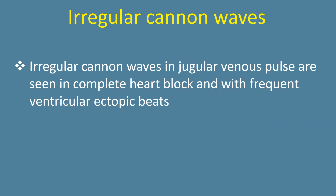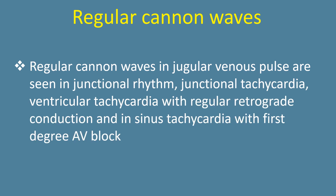Irregular cannon waves in jugular venous pulse are seen in complete AV block and with frequent ventricular ectopics. Regular cannon waves are seen in junctional rhythm, junctional tachycardia, ventricular tachycardia with regular retrograde conduction, and in sinus tachycardia with first-degree AV block.